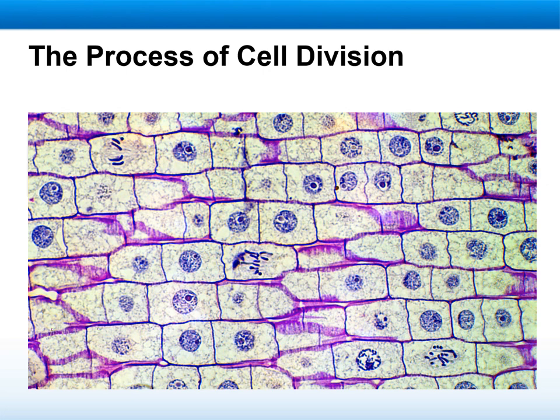In division, we divide it into two main processes: the division of the nucleus in a process called mitosis, and the division of the cytoplasm, which is called cytokinesis.